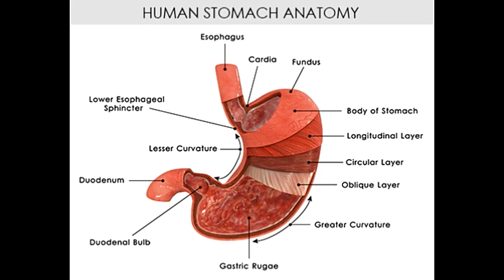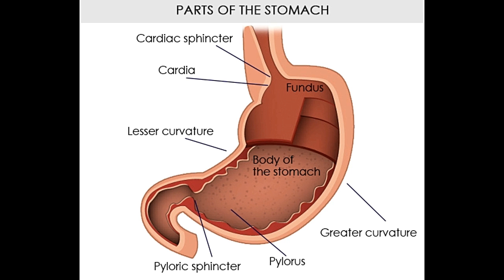The stomach is divided into four parts: cardia, fundus, body, and pylorus. The cardia refers to the section of the stomach located around the cardiac orifice. The lower esophageal sphincter lies at the junction where the esophagus meets the stomach, and it prevents the backflow of food from the stomach to the esophagus. The fundus lies above the cardiac orifice, contains swallowed air, and is located to the left and above the body of the stomach, which is the large central section.